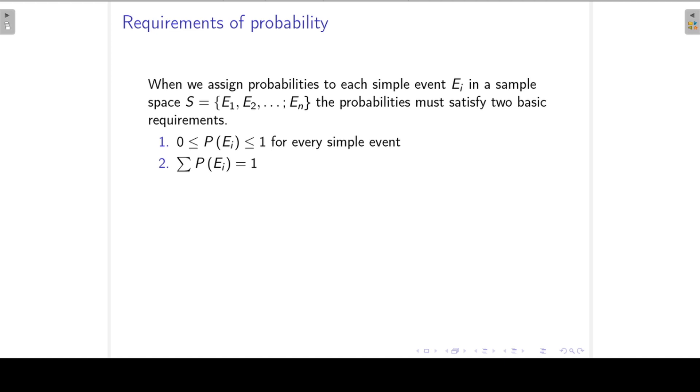Requirements of probability. When we assign probabilities to each simple event in a sample space, then the probability must satisfy two basic requirements. First of all, the probability of any simple event must lie between 0 and 1 inclusive. So that just means that you can never get a negative probability and that the probability can never exceed 1. You can never get a probability of more than 1 or 100 percent. And then the second requirement. If we add the probabilities of all the simple events in a sample space, then they must add up to 1.